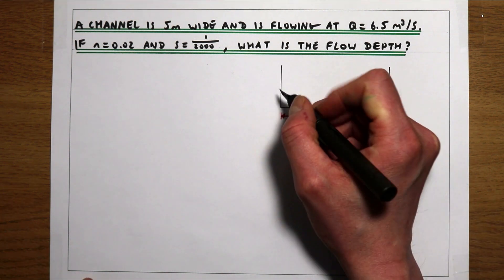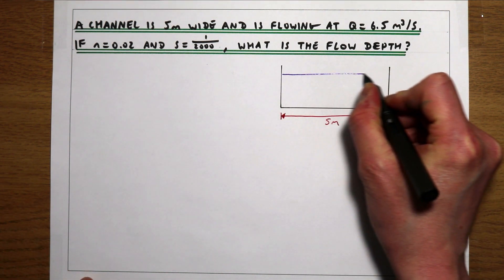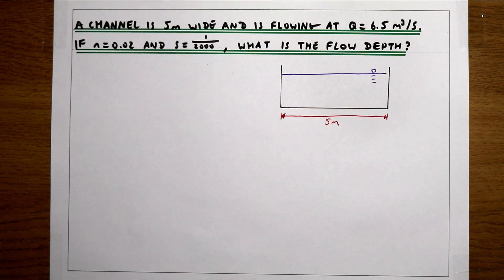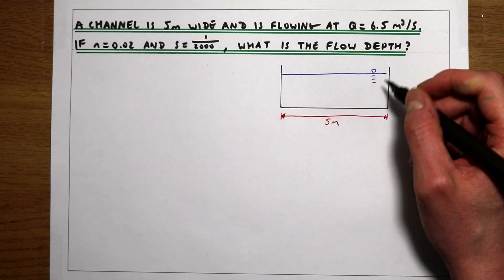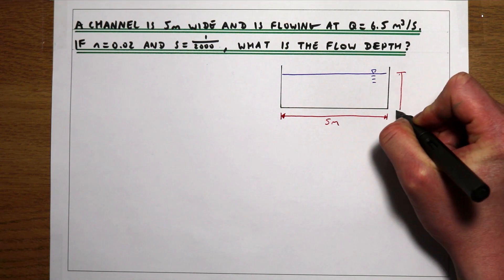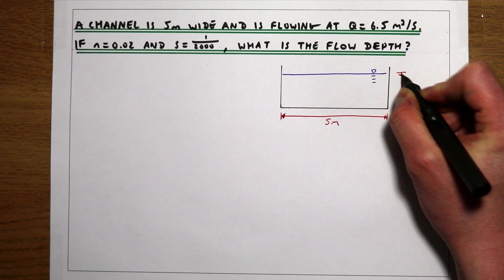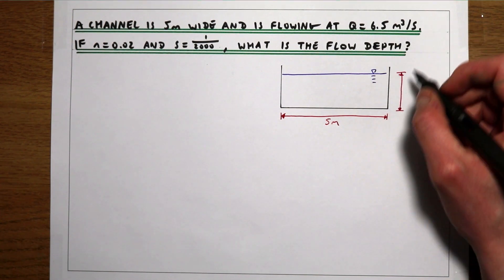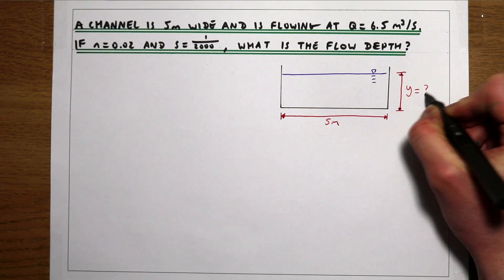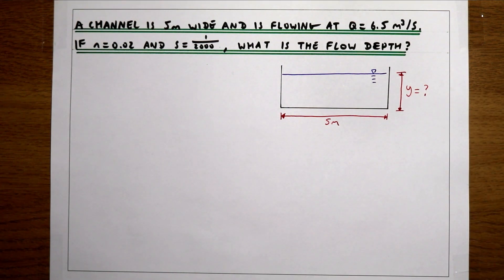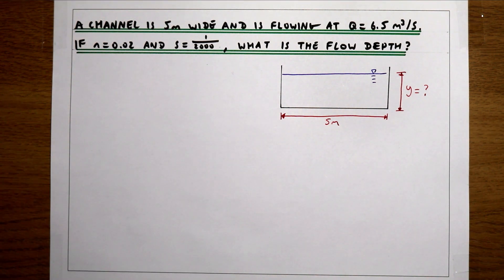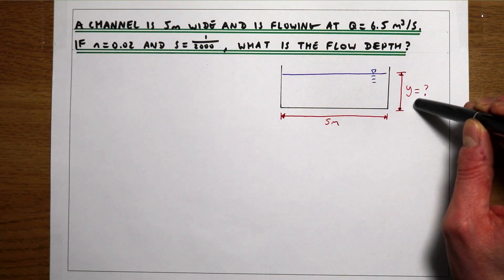What the question is asking for is the flow depth of this channel, Y. In the last example we were given the flow depth and had to work out the flow rate. In this example we're given the flow rate as 6.5 metres cubed per second but we're not given Y — we're asked to work out Y. So in essence this is the same as the last example but we're working backwards to find what Y is.